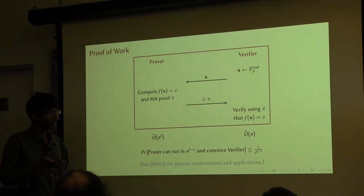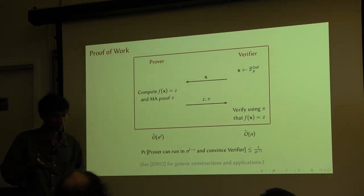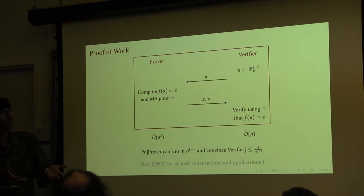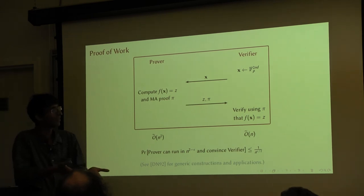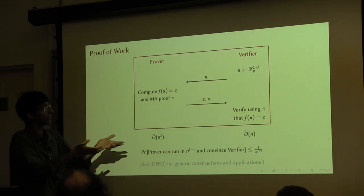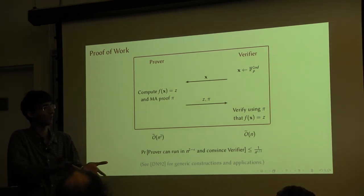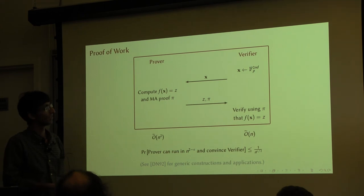It turns out that in our construction, because of the downward self-reducibility property, you can actually prove that this cannot be done. Assuming the orthogonal vectors conjecture, you can prove that if I give you n to the 10 instances of size n, then you have to run in n to the 12th time; otherwise you will be wrong on some of these instances. This is something that actually surprised us — we didn't construct these polynomials to have these properties, it just turned out to have all these nice properties.